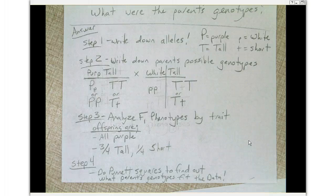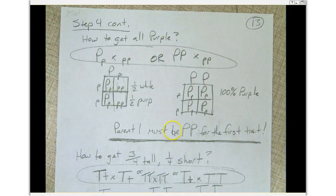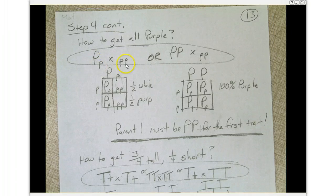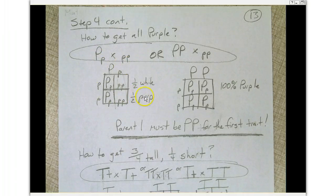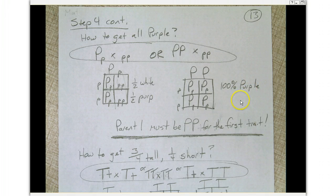The next step is to do Punnett squares to find out what parent genotypes fit this data. How do we get all purple? If big P little p is crossed with little p little p, we get one-half white and one-half purple. But if the first parent is big P big P crossed with little p little p, we get 100% purple. Since all offspring were purple, parent number one has to be big P big P for the first trait.